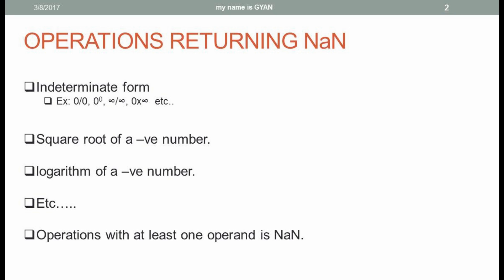You may have doubt about what is the significance of NaN. So here are the list of operations returning NaN. The first one is indeterminate form. For example, 0 by 0, 0 to the power 0, infinity by infinity, 0 multiplied by infinity, etc. Other examples are square root of a negative number, logarithm of a negative number, and many more examples are there.